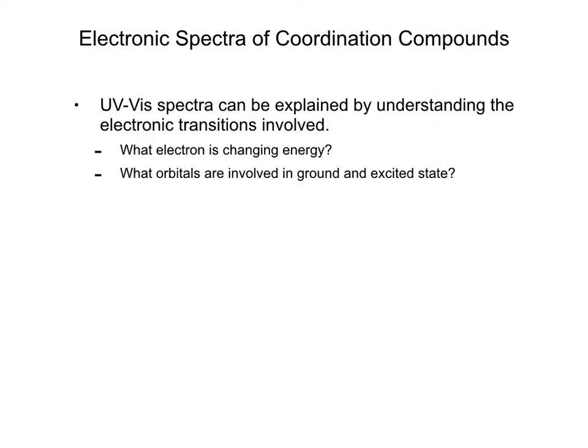UV-Vis spectra can be explained by understanding the electronic transitions involved. A couple of things we're often looking for: what electron is changing energy — that is, what is the actual electronic transition, which orbitals are involved, and what are the ground state and excited state?